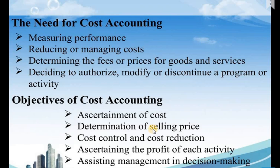In order to do all of that, you first need cost accounting information. This covers the need for cost accounting. Now the objectives of cost accounting include: ascertainment of cost — finding the prime cost, fixed cost, factory overheads, and variable cost — all of which can only be done with cost accounting.